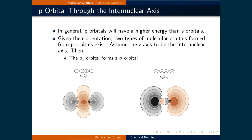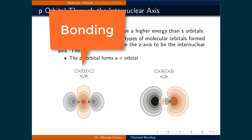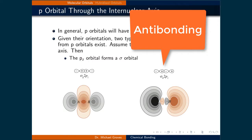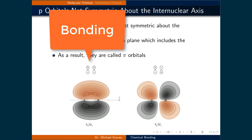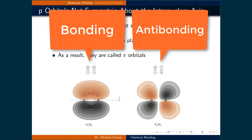In general, P orbitals will have a higher energy than S orbitals. Given the orientation of P orbitals, two types of molecular orbitals formed from P orbitals exist. Let's assume that the z-axis is the internuclear axis, meaning that it goes through both nuclei. Then the Pz orbital forms a sigma bond since the wave function solutions directly overlap. If the up part of both P orbitals overlap, they constructively interfere and a bonding orbital results. If the up part overlaps with a down part, the wave function destructively interferes and an antibonding orbital occurs. Since the z-axis is the internuclear one, the Px and Py orbitals are perpendicular to this axis. They can form the other type of molecular orbital — pi orbitals. When these orbitals overlap constructively, a bonding orbital is formed, and if they overlap destructively, an antibonding orbital occurs.